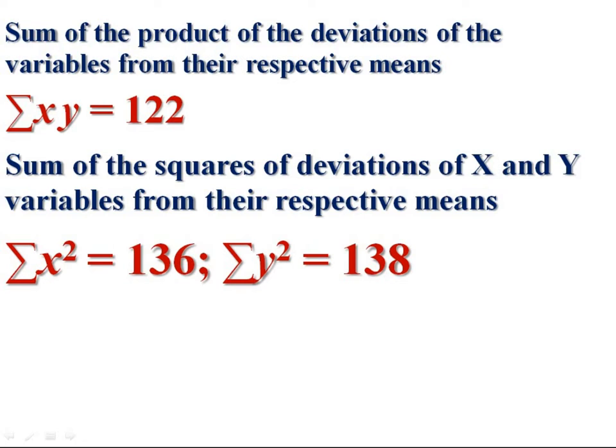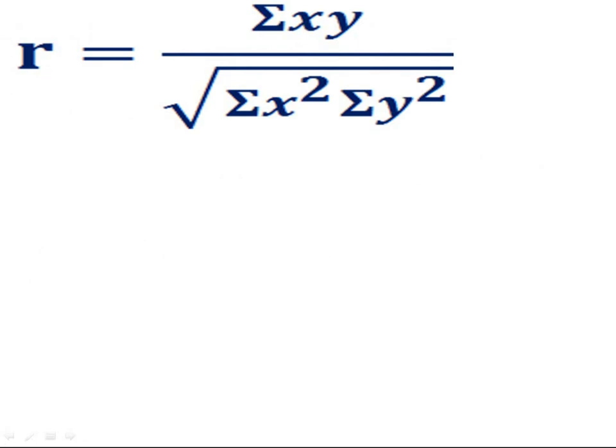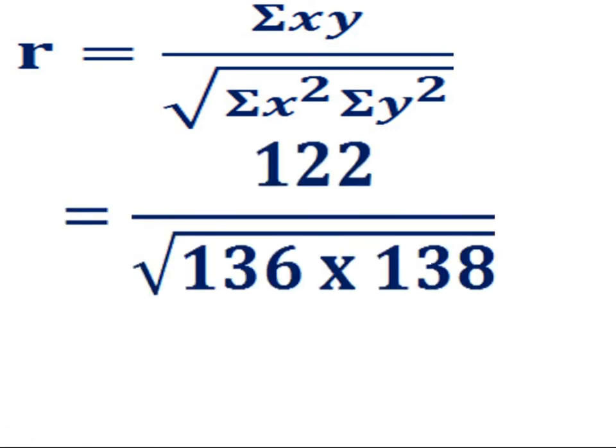Now we apply the formula for correlation coefficient. r equals sigma xy divided by the square root of sigma x square times sigma y square. That equals 122 divided by the square root of 136 times 138.